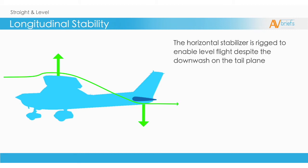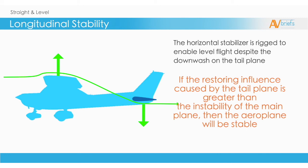The horizontal stabilizer is rigged to enable level flight despite the downwash on the tailplane. So now we have two opposing forces. If the restoring influence caused by the tailplane is greater than the instability of the mainplane, then the airplane will be stable.